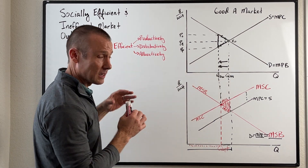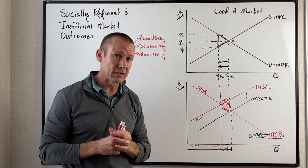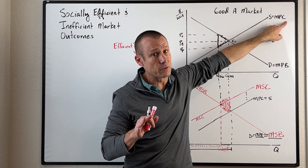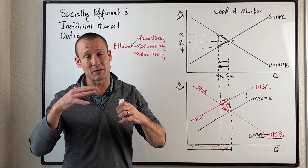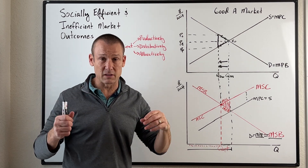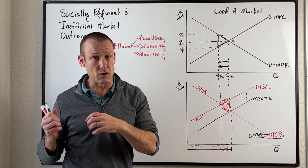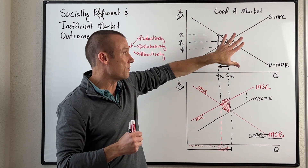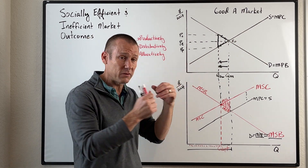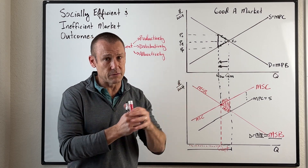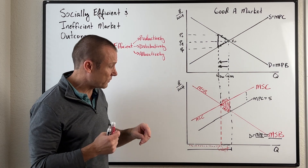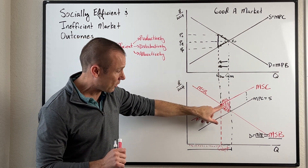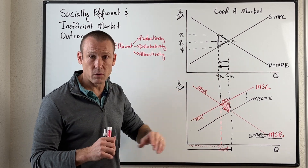Let's look at that title one last time: socially efficient and socially inefficient market outcomes. Could a market left alone be socially efficient? Absolutely — but MPC would have to equal MSC, MPB would have to equal MSB, there'd have to be no excess market power, perfect information, and the goods would have to be excludable and rivalrous. There's a lot that would have to take place. But markets do help us, and the government can intervene to move market output to where those S-curves intersect.